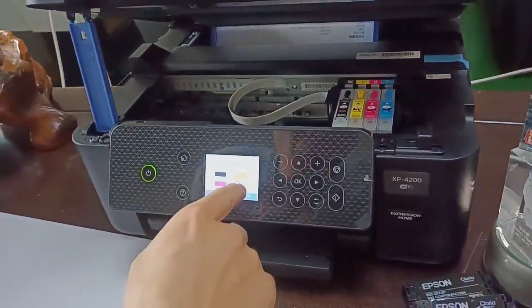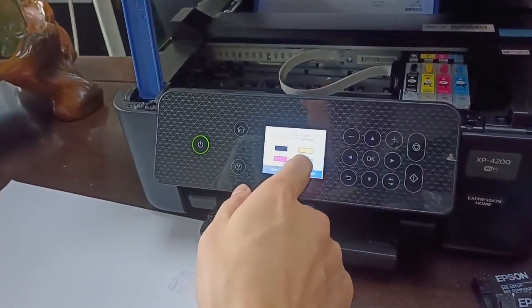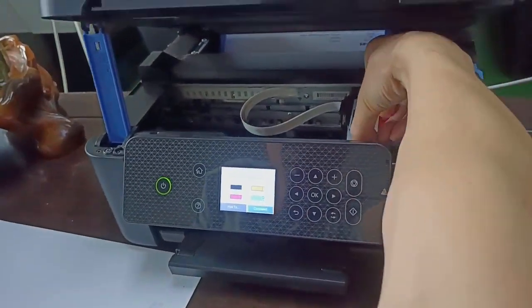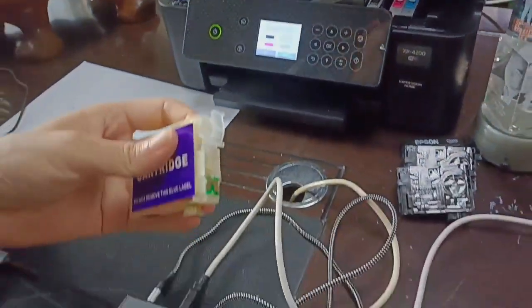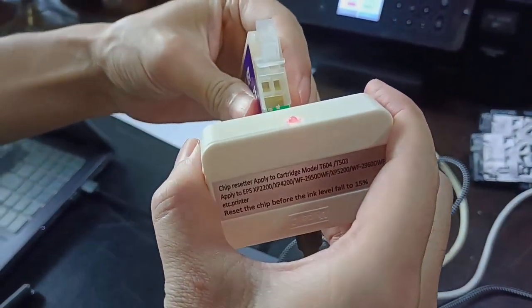But for the yellow cartridge, the ink level is down. We can reset it. When you reset it, the chip reset LED will turn green. That means it's okay.